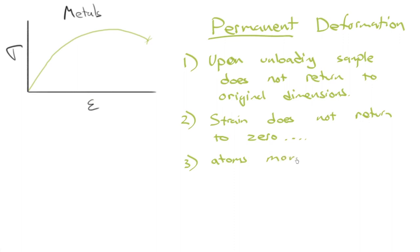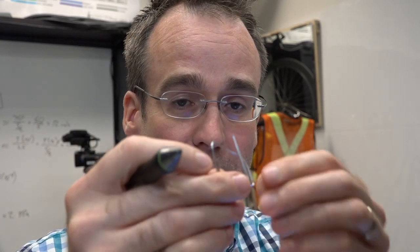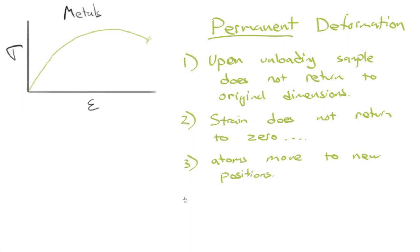And finally, if we want to be consistent with what we discussed for elastic deformation, we could discuss what happens to the atoms. The atoms must move to new equilibrium positions, move to new positions. They must—I mean, when I stretch this poor little paperclip, it physically changed shape macroscopically, so I had to move the atoms. I certainly did. I moved them to new equilibrium positions or new positions.